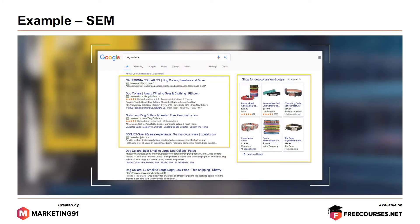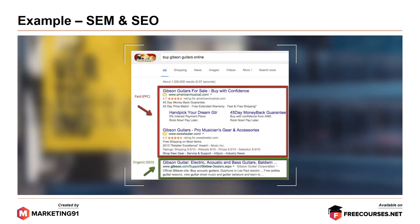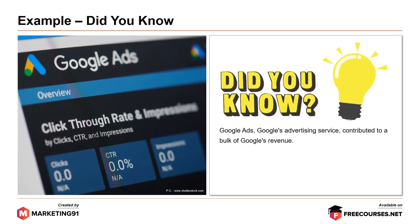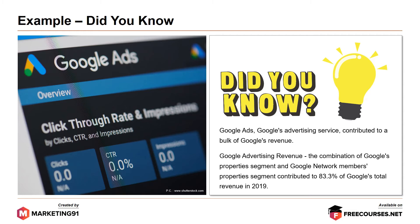Moving on to the example of SEM, as you can see the links marked in the yellow bar are paid ads. Here, a combination of paid — that is SEM — and unpaid, which is SEO. The ones in the red bar are paid ads and the one which is organic growth marked in green is the SEO. Did you know Google Ads and Google advertising services contribute to the bulk of Google's revenue? The combination of Google's property segment and Google network member property contributed to about 83.3% of Google's total revenue in 2019.